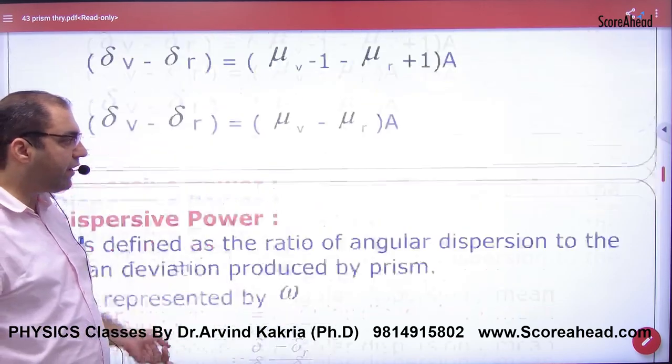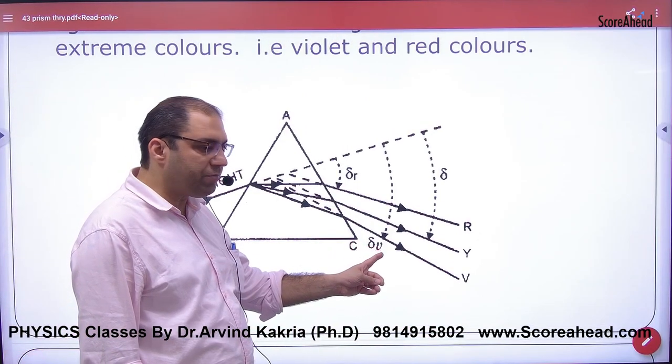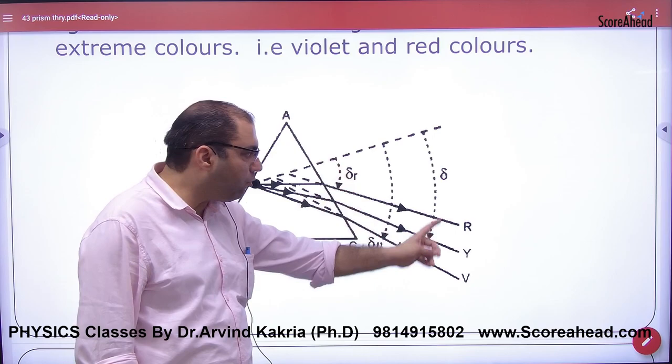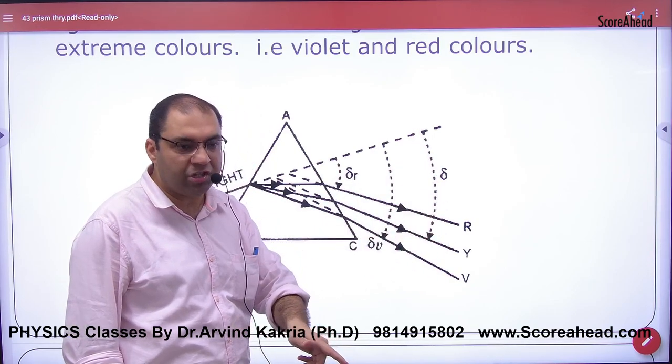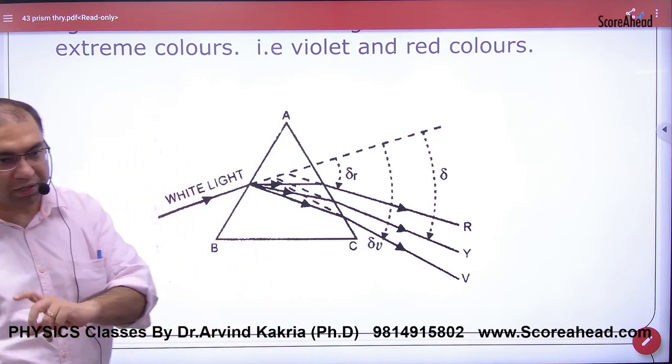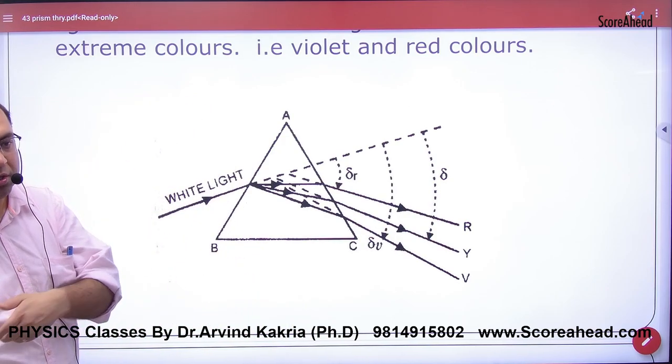Dispersive power, if you look at it in this sense: violet deviation is the most, red deviation is the least, and midpoint, what does it mean? Yellow. Yellow deviation is mean deviation. So if you look at delta average, then it will be yellow color.